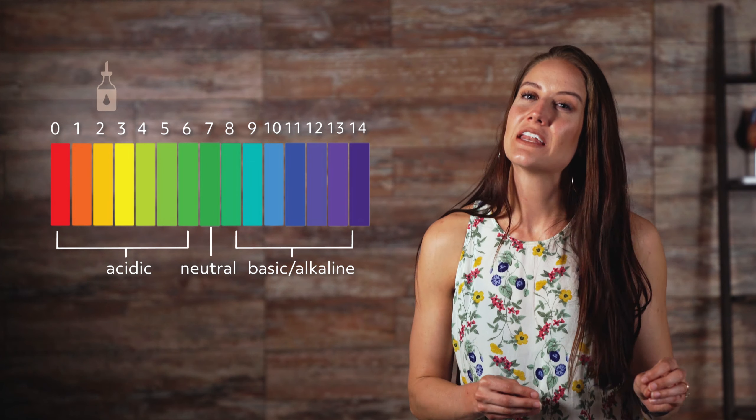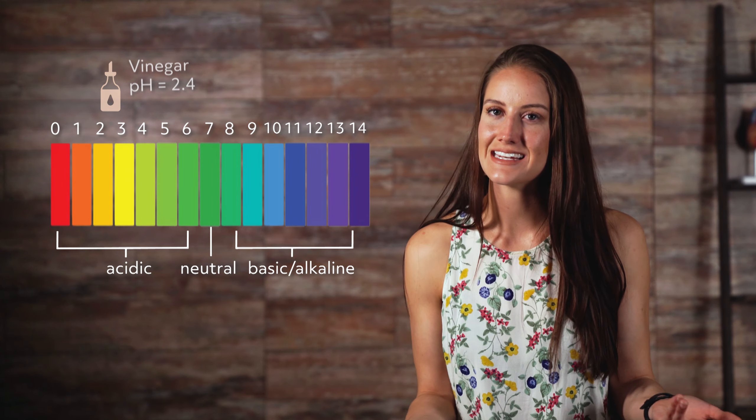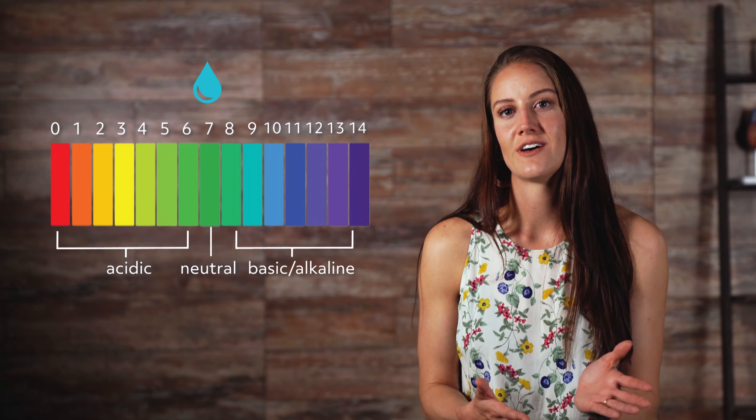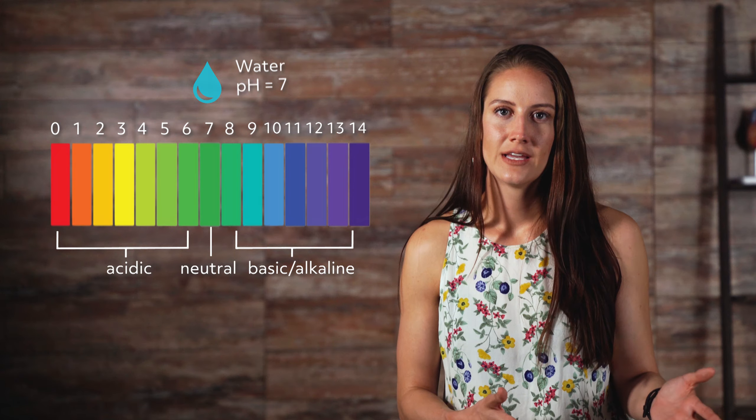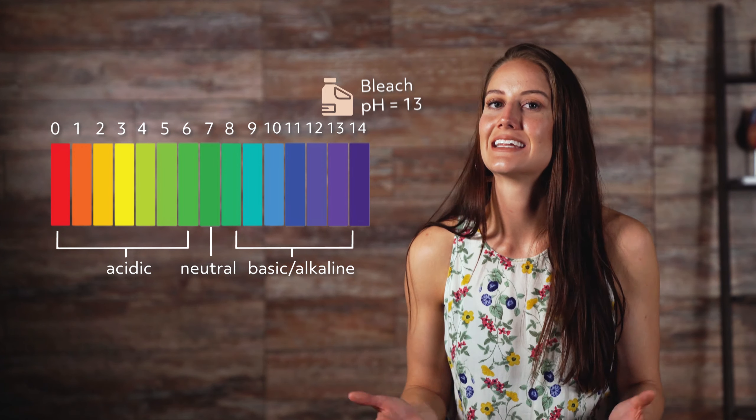For instance, vinegar has a pH value of 2.4 and is acidic, pure water has a pH value of 7 and is neutral, and household bleach has a pH value of 13 and is basic.